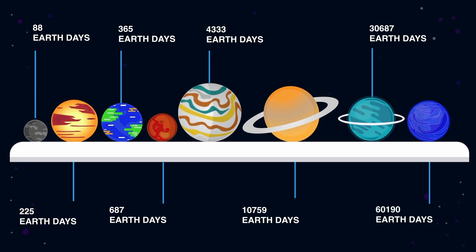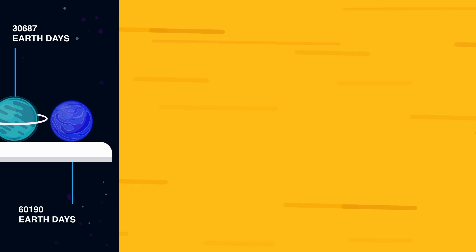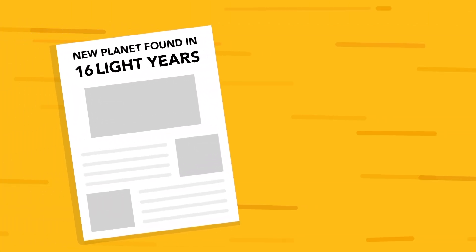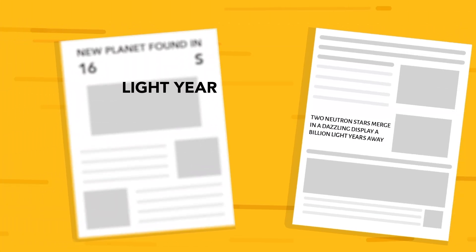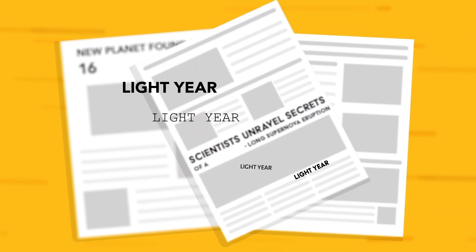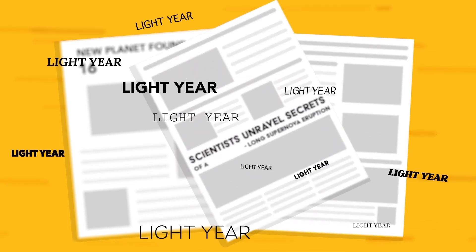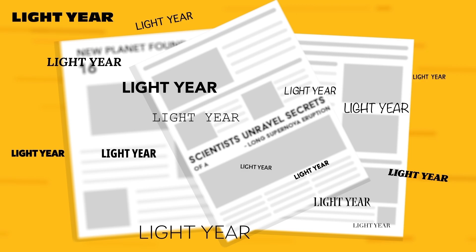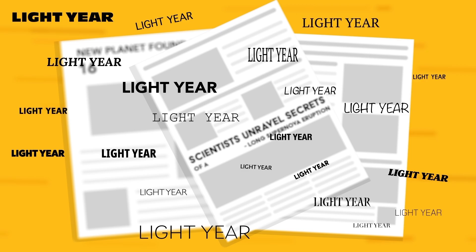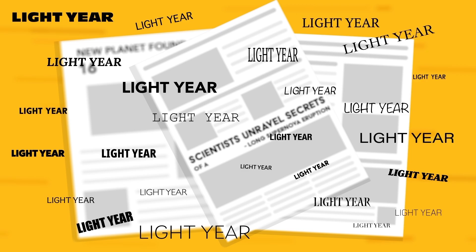We already know that a year is a measurement of time. But what is a light year? Is that a measurement of time, distance, or the time taken by light to complete its revolution around the Sun?